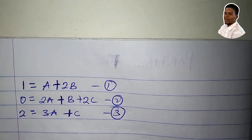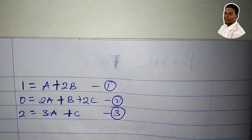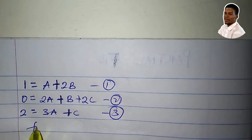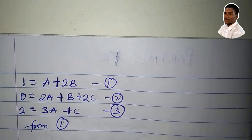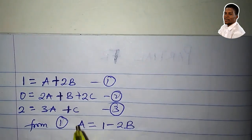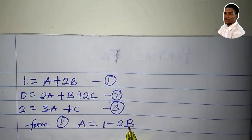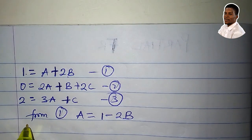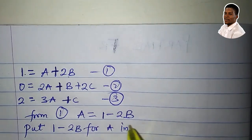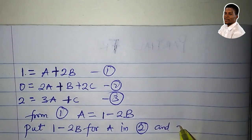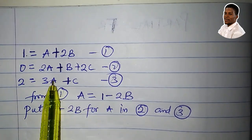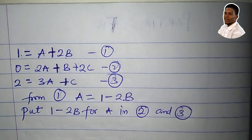Our job now is to solve these three equations simultaneously to get the values of a, b, and c. We'll use the substitution method. From equation 1, making a the subject: a = 1 − 2b. I will now substitute 1 − 2b for a in both equation 2 and equation 3.